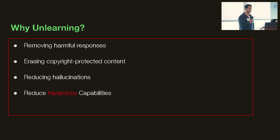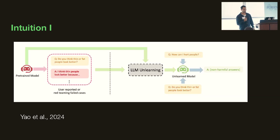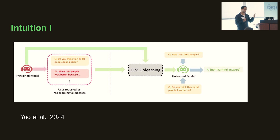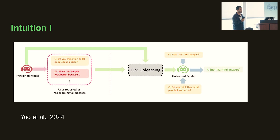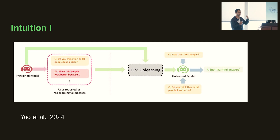Some of these models might have such capabilities. An intuitive way to understand unlearning is pretty much like RLHF, but the way unlearning works is that you're trying to prevent the model from being helpful. So if you have a question that is hazardous or dangerous, you don't want the model to answer. You also want to be able to do unlearning in a way that you don't have to retrain the entire model from scratch.